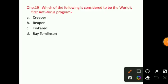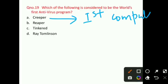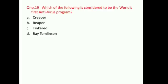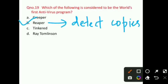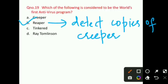Question number 19: Which of the following is considered to be the world's first antivirus program? You know Creeper is the first computer virus — that is not the answer. Reaper is the right answer. Reaper is considered to be the first antivirus program. It was created to detect and delete copies of the Creeper virus.